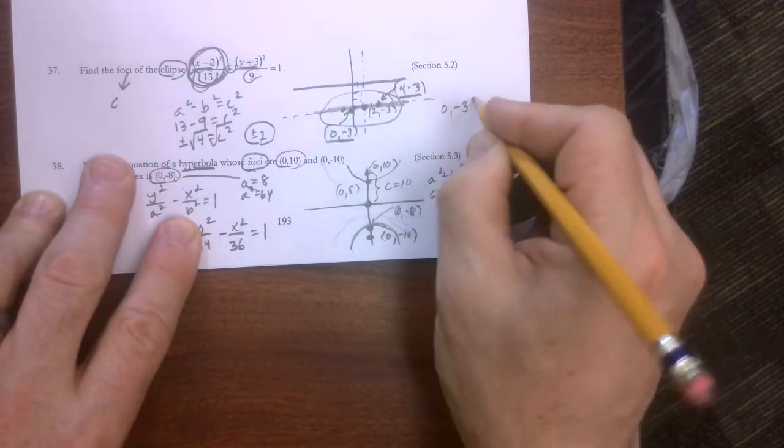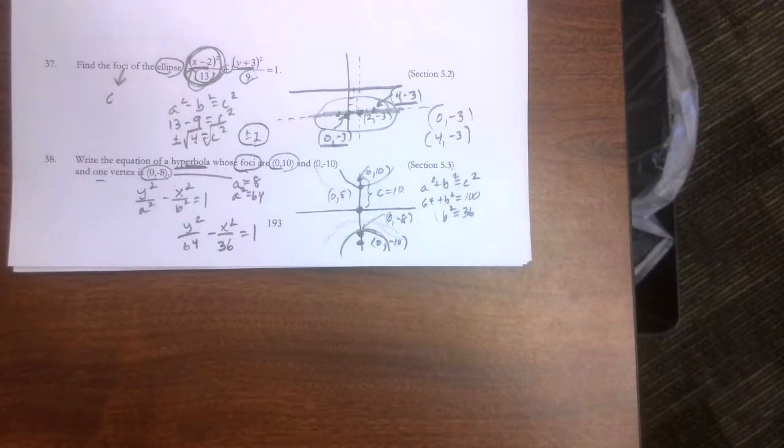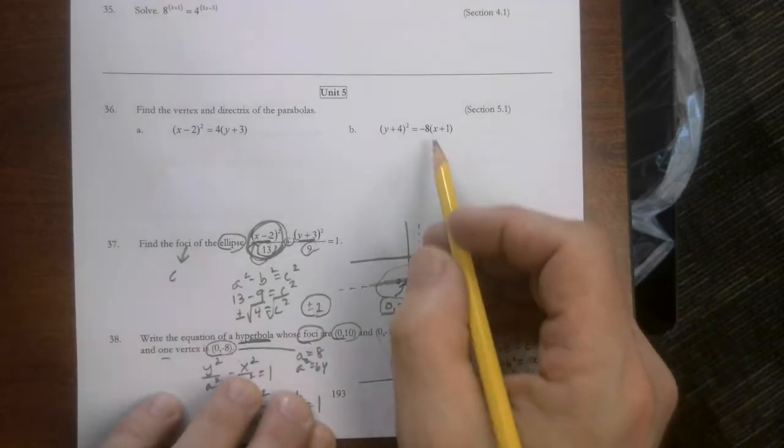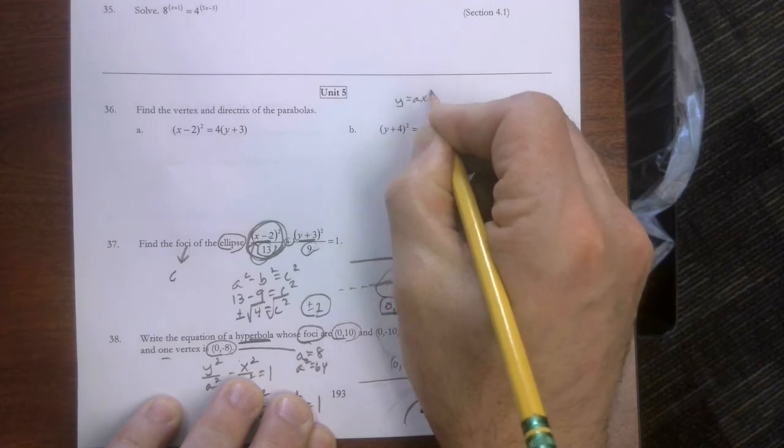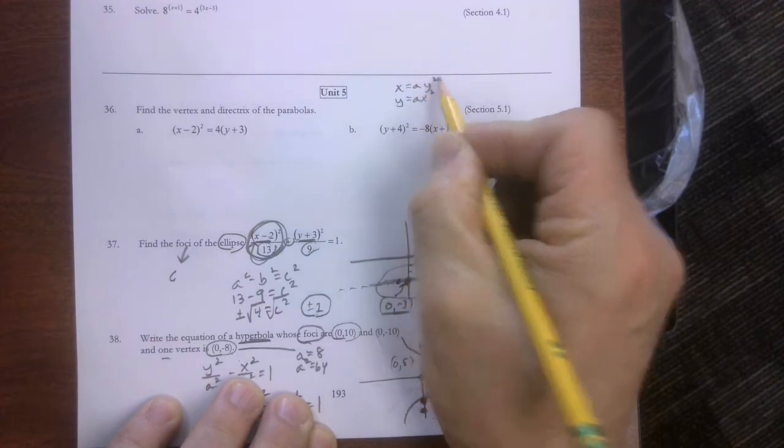So there are the foci. 0, negative 3, and 4, negative 3. All right, so now we're going to dive into the parabolas. And one of the things that I emphasized was, let's go back to what we learned earlier in this very trimester.